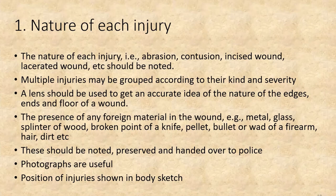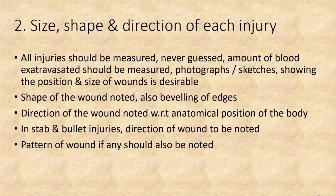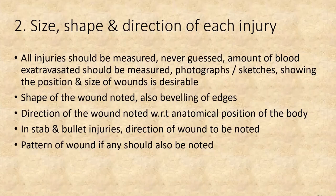The position of injuries may be shown on a body sketch. The second point is the size, shape and direction of each injury. All injuries should be measured — never do a guesswork. The amount of blood extravasated should be measured, and photographs or sketches showing position and size of wounds are also desirable. The shape of the wound should be noted, including the bevelling of edges. Direction of the wound should be noted with respect to the anatomical position of the body, particularly for stab and bullet injuries.